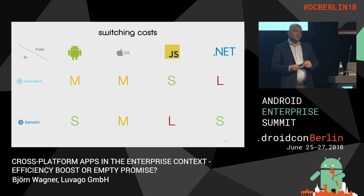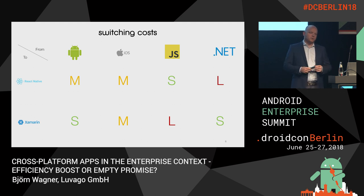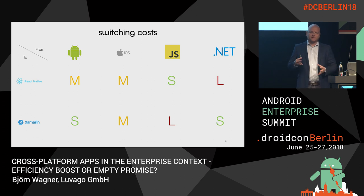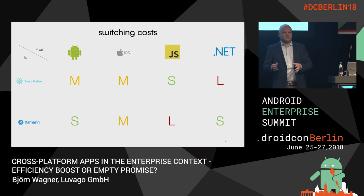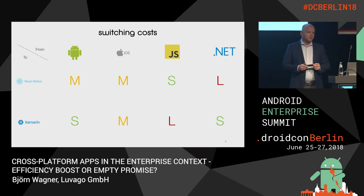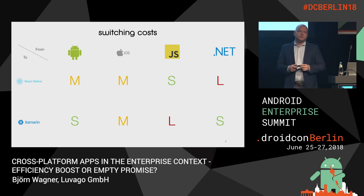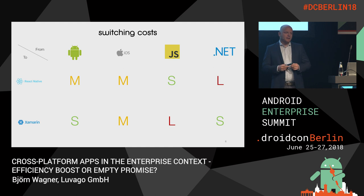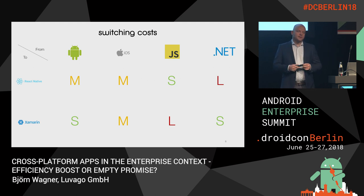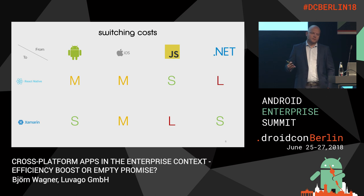This is especially true considering that you also change the programming model — for example, we bring in some web technology, Redux, and reactive programming into the mobile world using React Native. With that change of programming model, developers need usually a bit more time to adjust. I think the same is true for iOS — I wouldn't see any big differences when migrating a team of Android and iOS developers to the React Native platform. What worked really well for us is to take JavaScript developers, also full-stack JavaScript developers, and bring them onto the mobile team, because they're already used to the toolset and the processes.